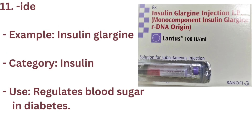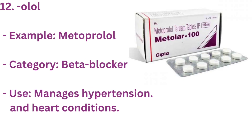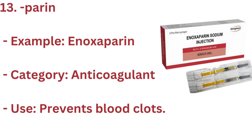11. GLARGINE (IDE) — Example: INSULIN GLARGINE. Category: INSULIN. Use: REGULATES BLOOD SUGAR IN DIABETES. 12. OLOL — Example: METOPROLOL. Category: BETA BLOCKER. Use: MANAGES HYPERTENSION AND HEART CONDITIONS.